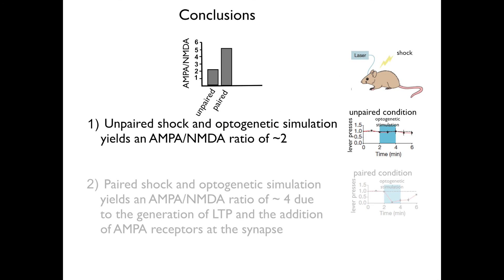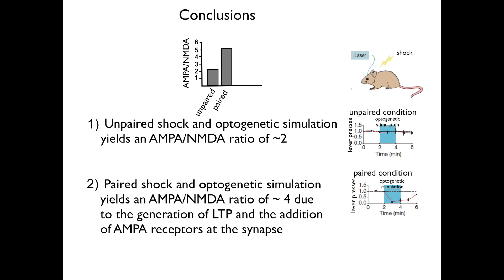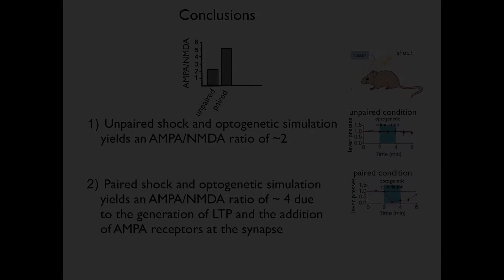The conclusions of this study are that unpaired shock and optogenetic stimulation yields an AMPA to NMDA ratio of about 2, whereas paired shock and optogenetic stimulation yields an AMPA to NMDA ratio of about 4 or even larger, due to the generation of LTP and the addition of AMPA receptors at the synapse.